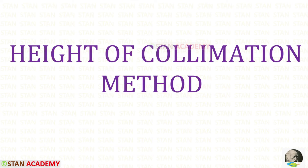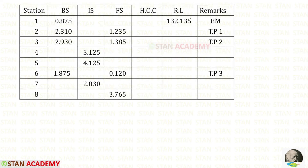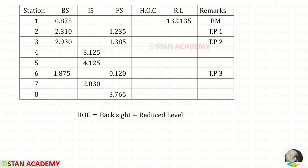Now we are going to do the same problem by the height of collimation method. In this method, the table has columns for: station, back sight, intermediate sight, foresight, height of collimation, reduced level, and remarks. There are four back sights, so the height of collimation will appear at each of those four rows.